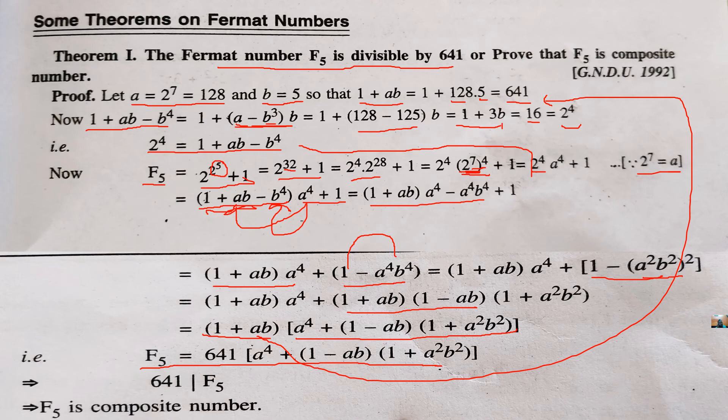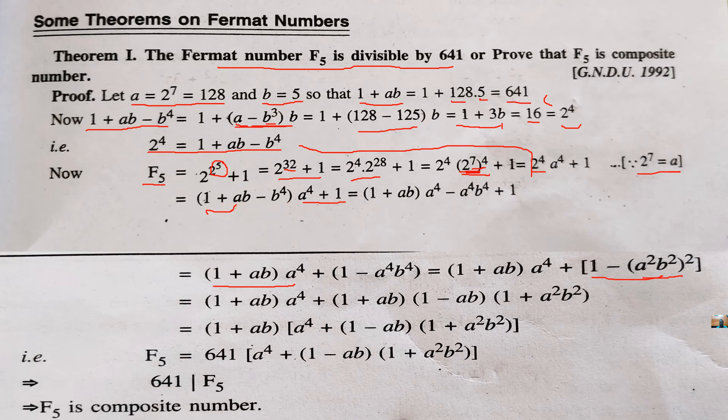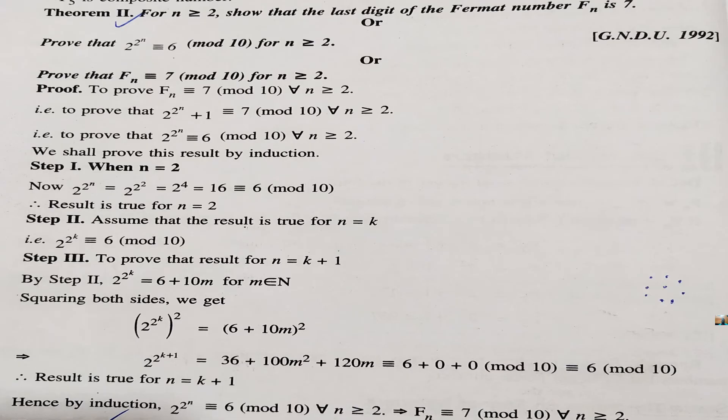It means 641 divides f5. In this way, we have simply proved that f5 is a Fermat number which is composite. So, that is it. Moving to the next theorem.